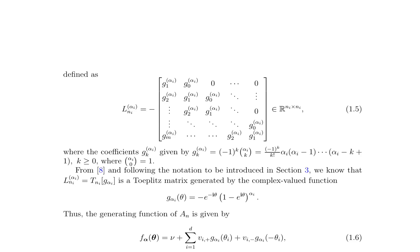The matrix L_{α_i, m_i} is a Toeplitz matrix defined by the complex-valued function G_{α_i}(θ), with coefficients g_{α_i, k} given by the binomial-type expression for k ≥ 0. This matrix is used to construct the generating function f_α(θ) equals ν plus the summation over i from 1 to d of (v_i^+ · g_{α_i}(θ_i) plus v_i^- · g_{α_i}(-θ_i)), where α equals (α_1, …, α_d).